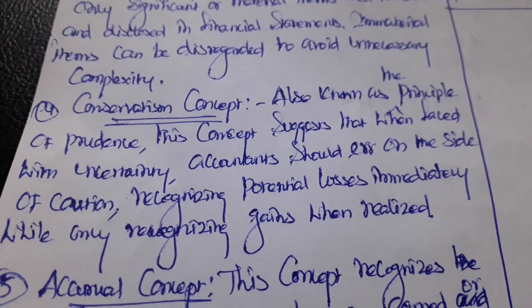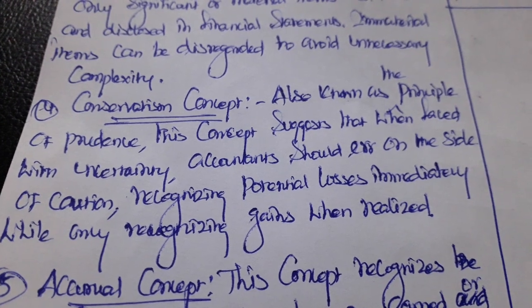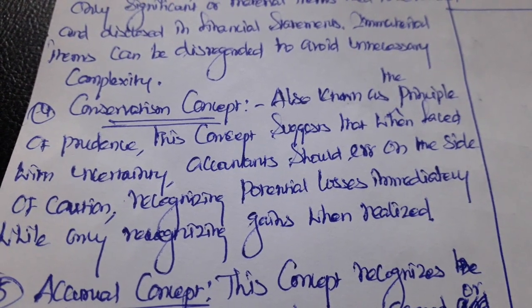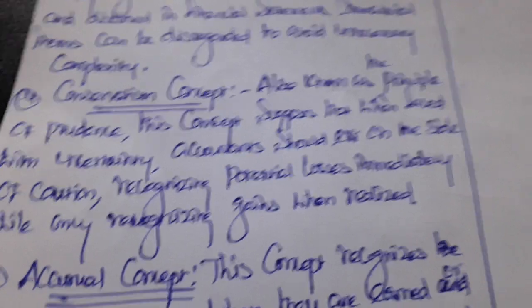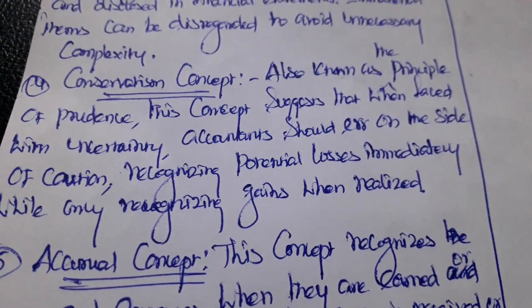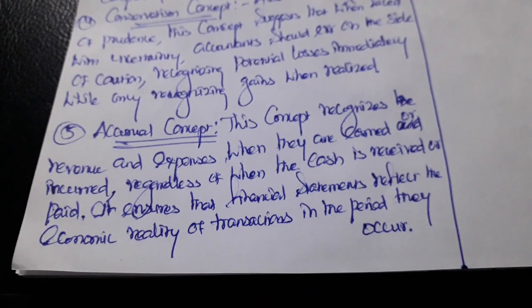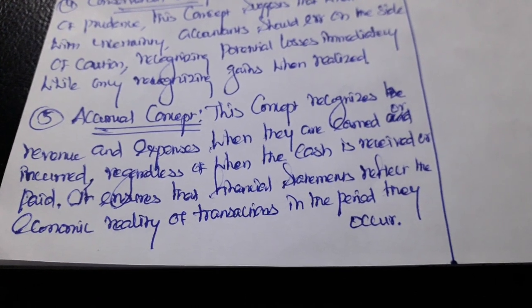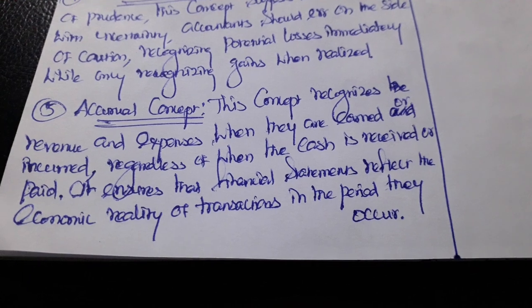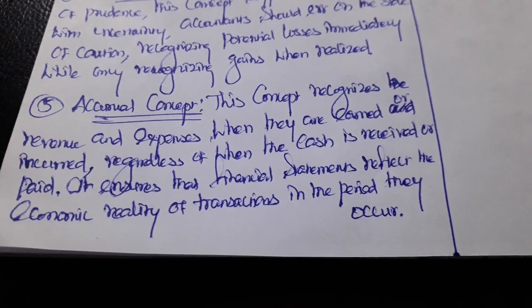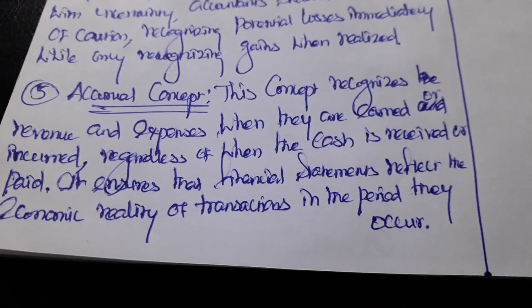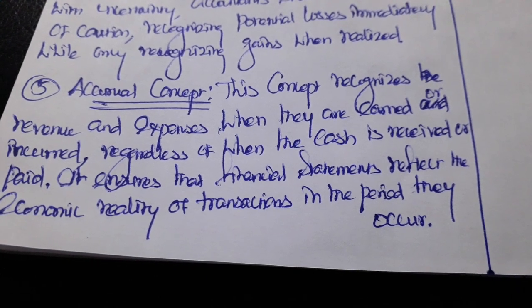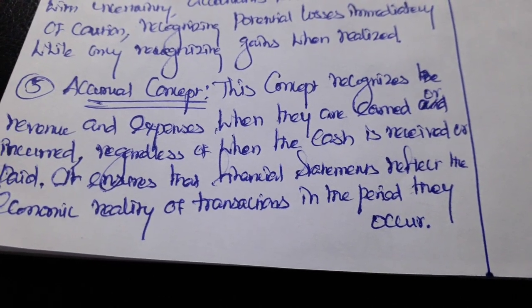Conservatism means that when accountants face uncertain situations, they need to record on the cautious side. They will recognize potential losses rather than gains, recognizing losses when they are incurred regardless of when cash is received or paid. This ensures that financial statements reflect the economic reality of transactions in the period they occur.